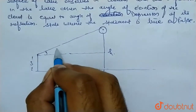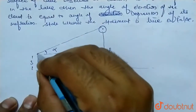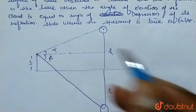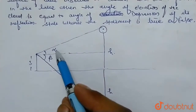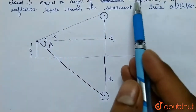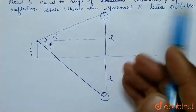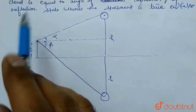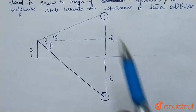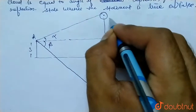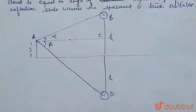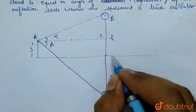Suppose the angle of elevation of the cloud is alpha, and the angle of depression of the image is beta. We have to prove that alpha is not equal to beta. The statement says they are equal, so we determine if that is true or false. Name the points: this point is A, this is B, this is C, this is D, this is E, and this is F.